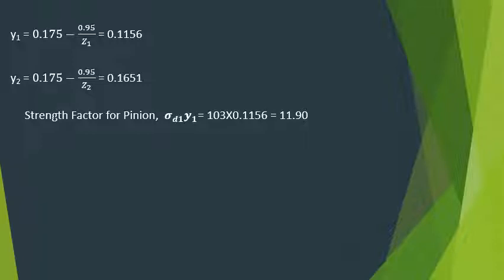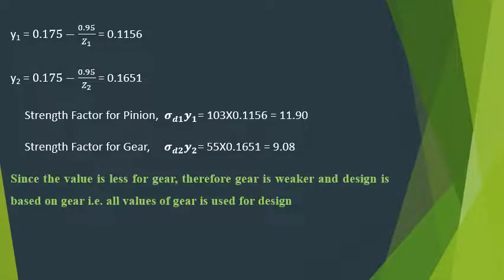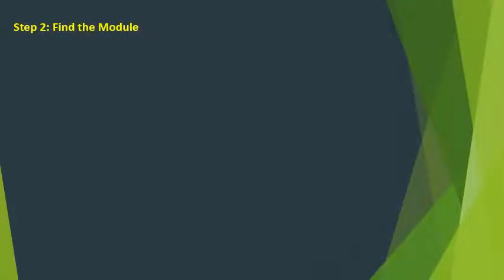Now we find the strength factor for each. Strength factor for the pinion = σ_d1 × y1 = 103 × 0.1156 = 11.90. Strength factor for the gear = σ_d2 × y2 = 55 × 0.1651 = 9.08. Since the gear's strength factor is lower, the gear is the weaker member and design is to be based on the gear.